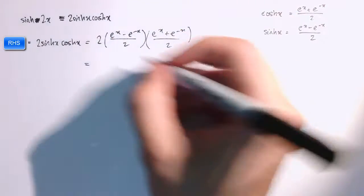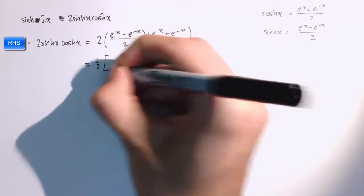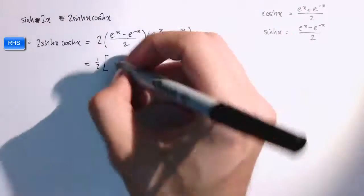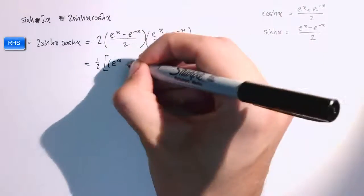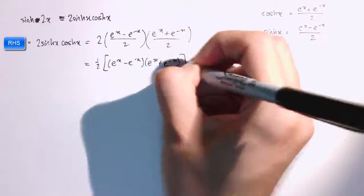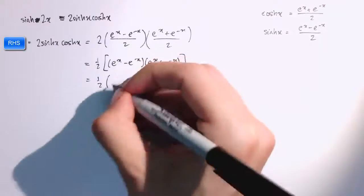So, then we've got 2 times a half times a half so we've just got one half here and if we multiply out the numerators here, so let me just write that again, so we've got e to the x minus e to the minus x times e to the x plus e to the minus x. So, I'm going to get one half times e to the x times e to the x.